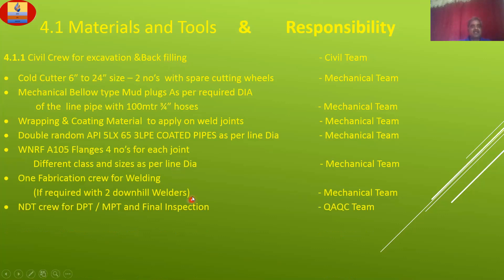Normally, downhill welders are specified because if it is a cross-country pipeline repair, they follow the pipeline welding procedures — Stovepipe welding. Stovepipe welding means the root pass should be uphill and other passes should be downhill. This is for normal repair activities. 100% NDT: DPT, and final inspection by QAQC team.